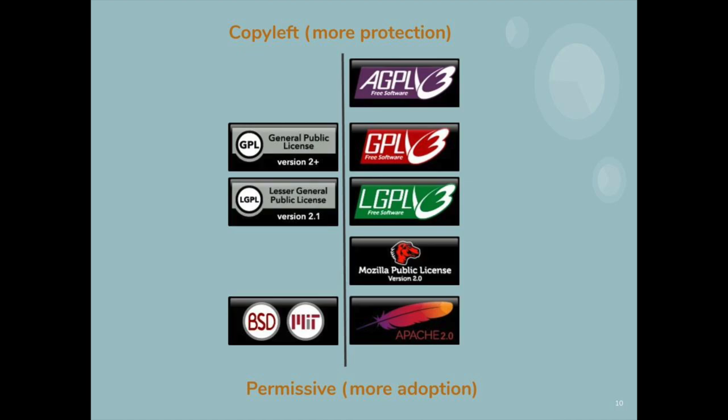Now let's move to making a decision about copyleft versus permissive. If you choose a permissive license, you will maximize adoption. Most companies will adopt open-source software under permissive licenses with little or no legal review. For copyleft licenses, they may be more reluctant — remember what I said about the understanding tax. Permissive licenses have virtually no understanding tax. But those licenses provide you no protection whatsoever against competitors trading on your code, because anybody can do anything they want with permissively licensed software.